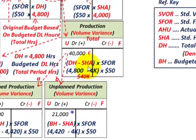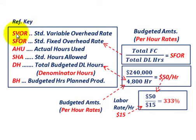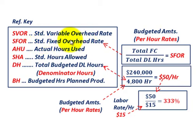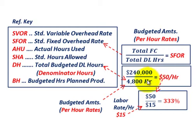Let's go over the reference key for our equations. SFOR is the standard fixed overhead rate. AHU is actual hours used. SHA is standard hours allowed. DH refers to total budgeted direct labor hours for the period — called denominator hours because they are the denominator in our equation to determine the standard fixed overhead rate. BH is the budgeted hours for the planned production.